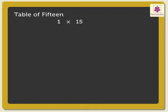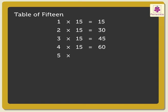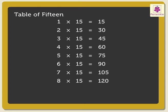The table of Fifteen: 7 × 15 are 105, 8 × 15 are 120, 9 × 15 are 135, 10 × 15 are 150.